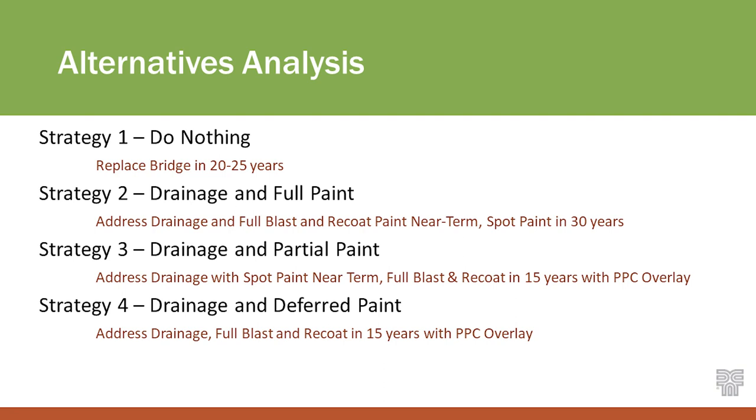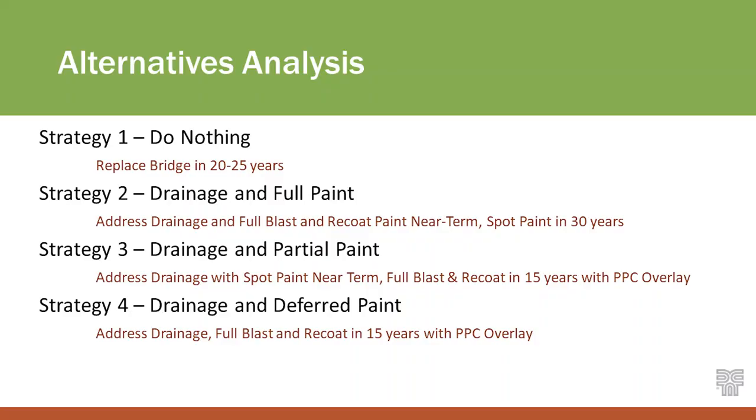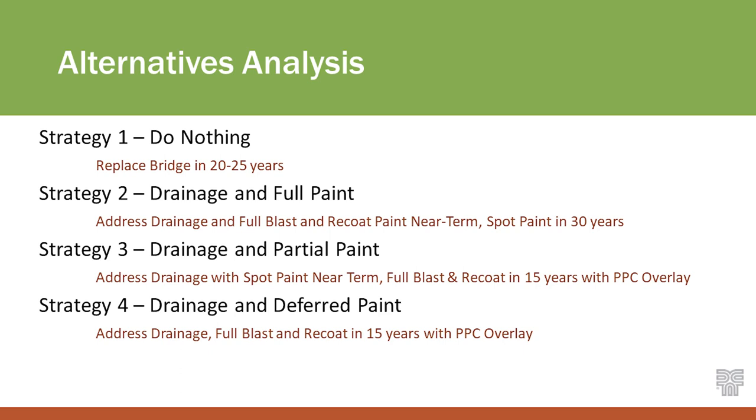So we talked about what we're recommending; then the question is when and in what order. We looked at four strategies. The first is do nothing — we can all agree that's probably not the recommended option at a preservation conference, but we need to discuss it. The next three strategies are all related to drainage and paint. We'll address drainage up front in all of them. Strategy two is a full blast and re-coat addressing all the paint in the near term, then spot painting in the future. Strategy three is drainage plus spot paint early on — less expensive up front — then a full paint when the polyester overlay needs replacement. Strategy four defers the paint entirely, the cheapest up front, then a full repaint in 15 years when the overlay theoretically needs replacing.